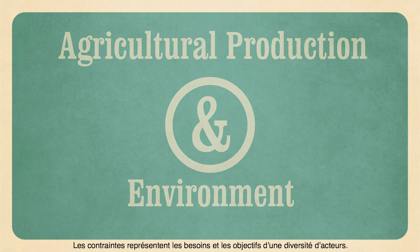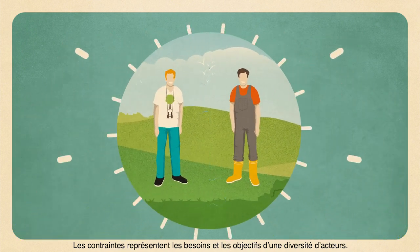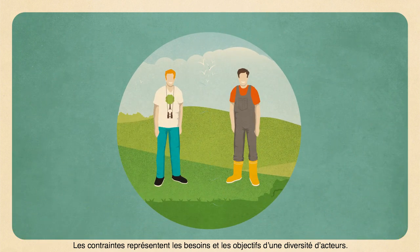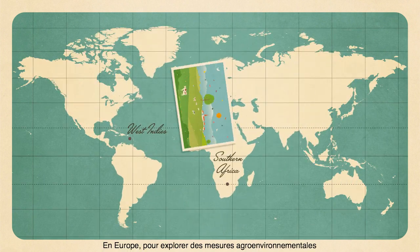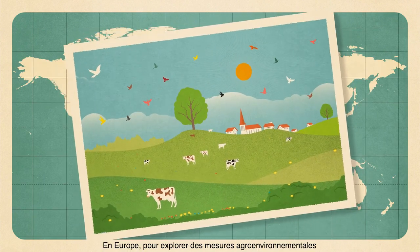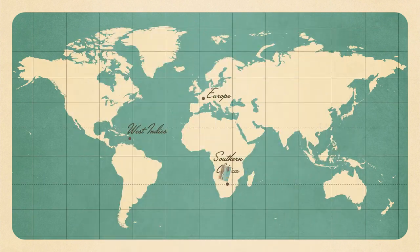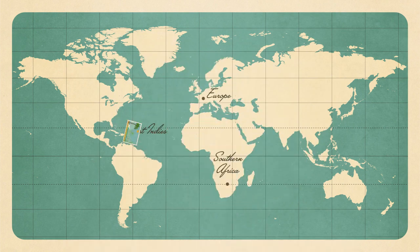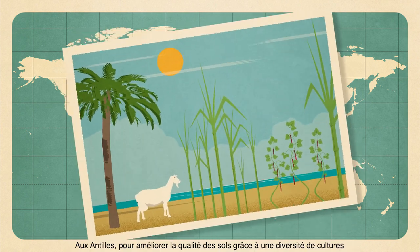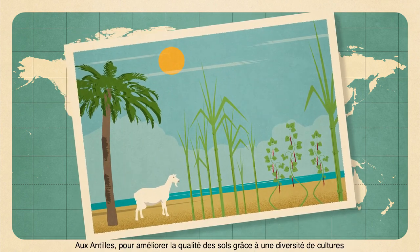The constraints represent the needs and objectives of a broad range of actors. It's already working: in Europe, for exploring agro-environmental measures; in Southern Africa, for understanding the dynamic of shrub encroachment in savannas; and in the West Indies, for improving soil quality through crop diversity.